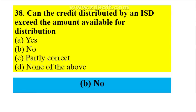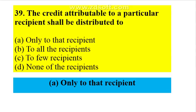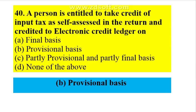Can the credit distributed by an input service distributor exceed the amount available for distribution? No — it cannot exceed. The credit attributable to a particular recipient shall be distributed only to that recipient. A person is entitled to take credit of input tax as self-assessed in the return and credited to the e-credit ledger on a provisional basis only.